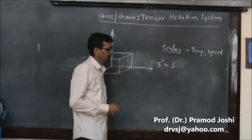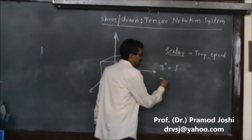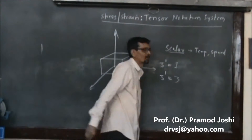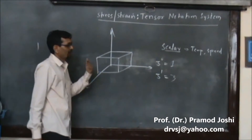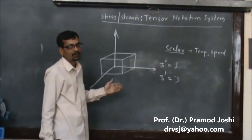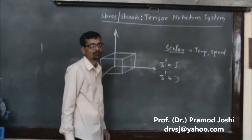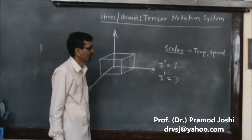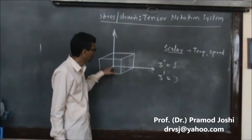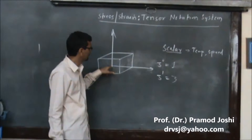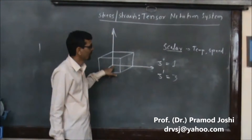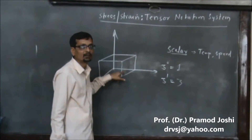A vector is considered as a tensor of the first order. A vector requires for its complete description, apart from magnitude, a direction. So we need to tell the magnitude and at the same time, with reference to this coordinate system — that means the origin of this coordinate system — in which direction that vector is pointing.